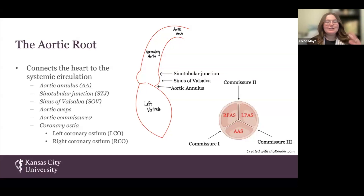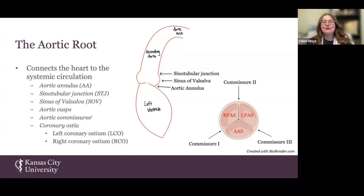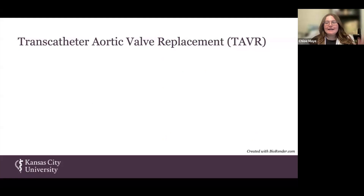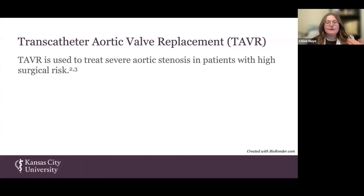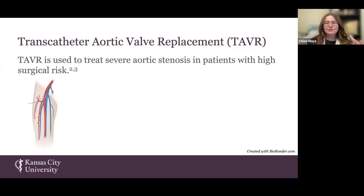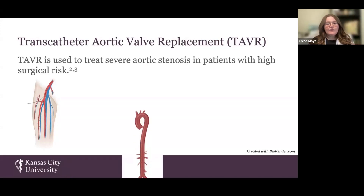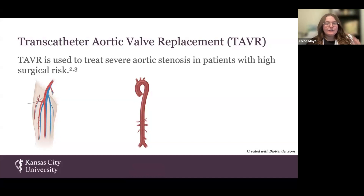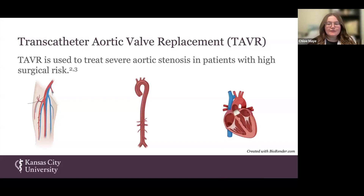I know I just threw a bunch of anatomy terms at everybody — I promise there won't be a quiz later — but it's important to introduce these structures so I can talk about how they're clinically relevant. In order to do so, I need to introduce you to transcatheter aortic valve replacement, commonly referred to as TAVR. TAVR is approved for the treatment of severe aortic stenosis in patients that have high surgical risk. In the TAVR procedure, a catheter is introduced into the femoral artery and routed up to the aorta, then directed along the course of the aorta until the aortic valve is reached, where an artificial valve is deployed and expanded to fill the dimensions of the aortic root.